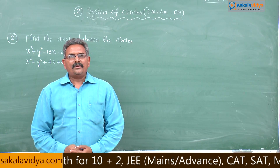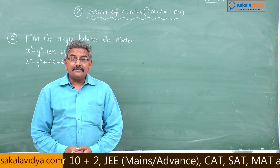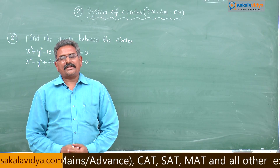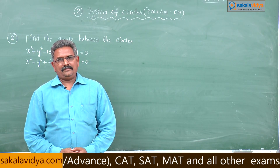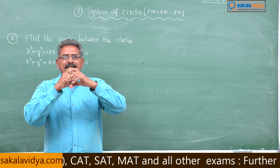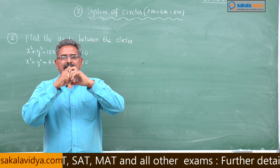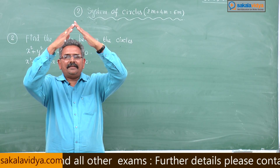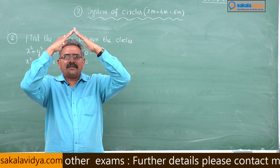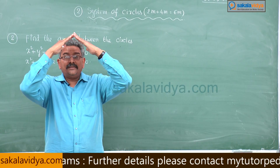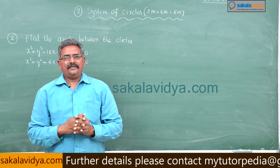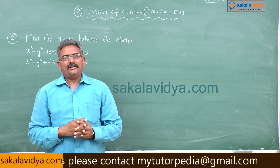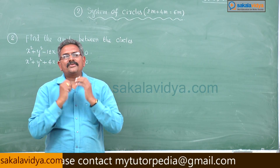First, what is meant by the angle between the two circles? If the two circles intersect each other, the angle between the tangents drawn at the point of intersection is called the angle between the two circles.